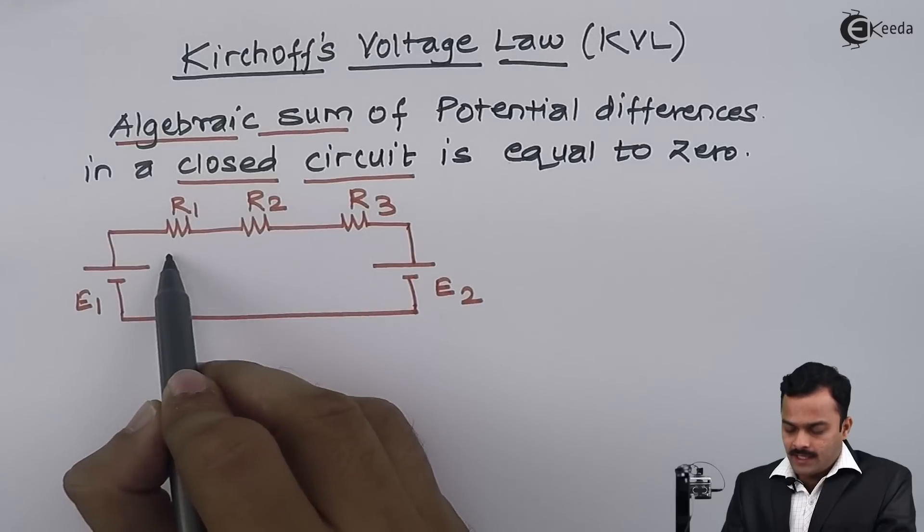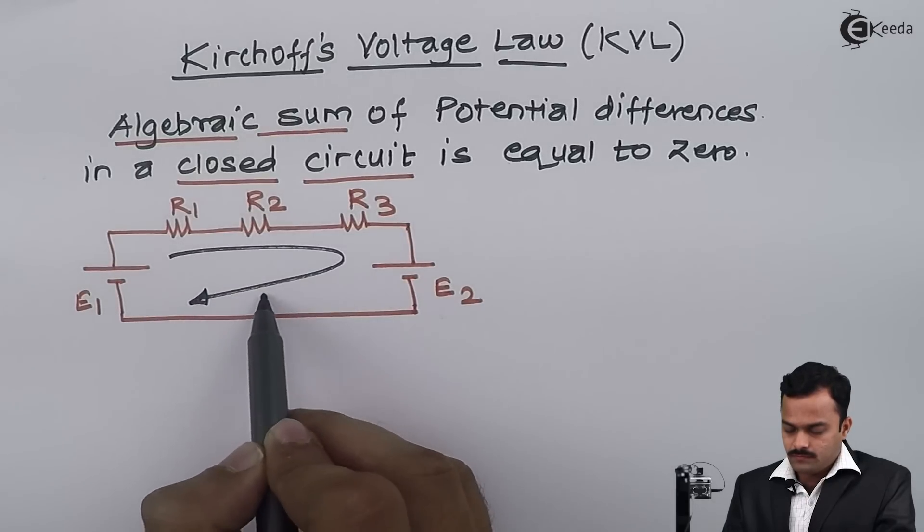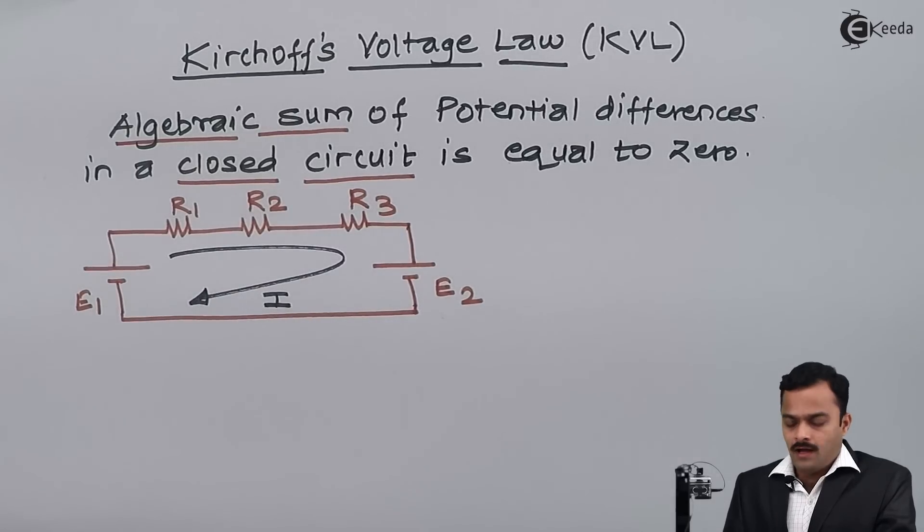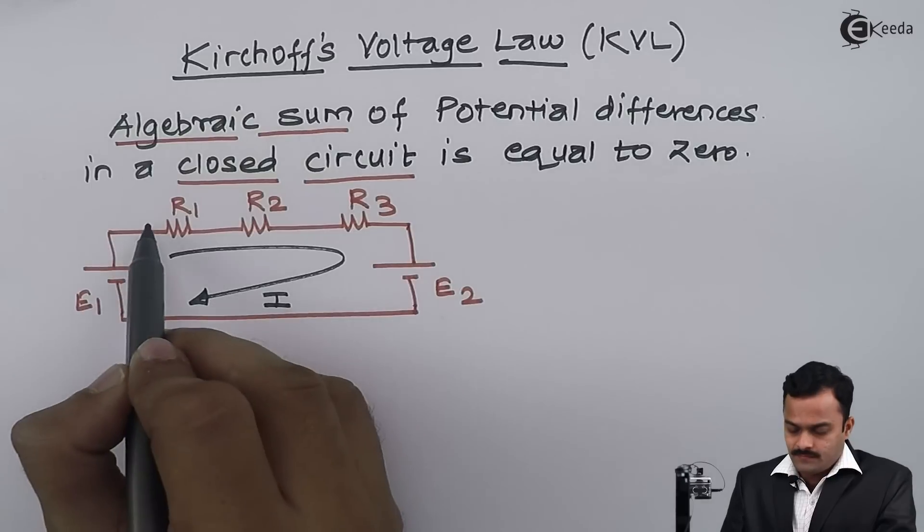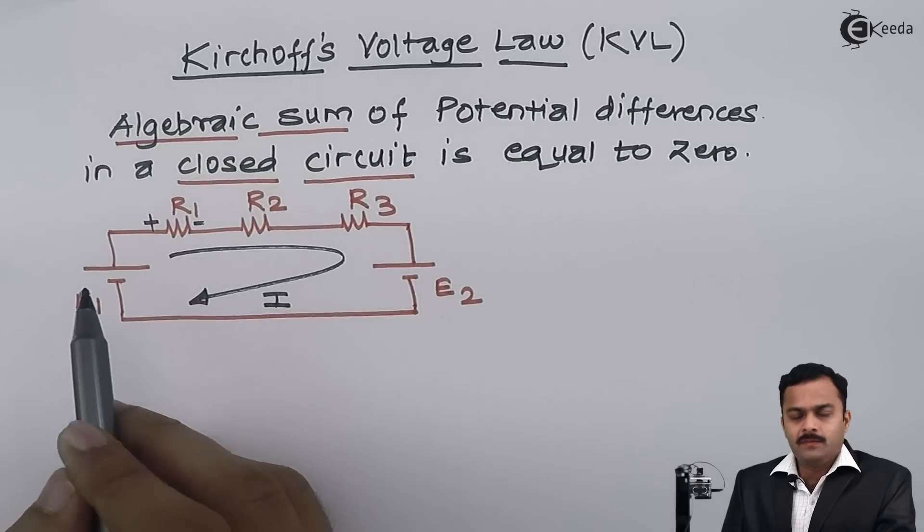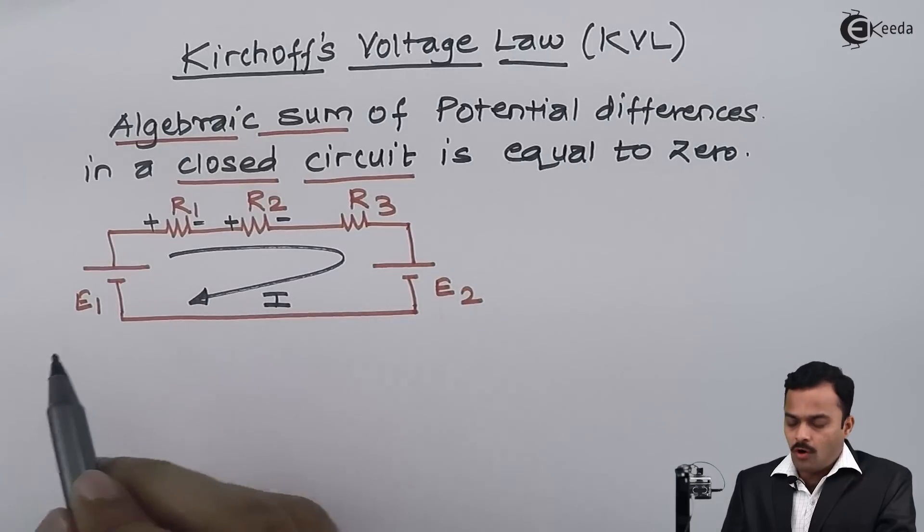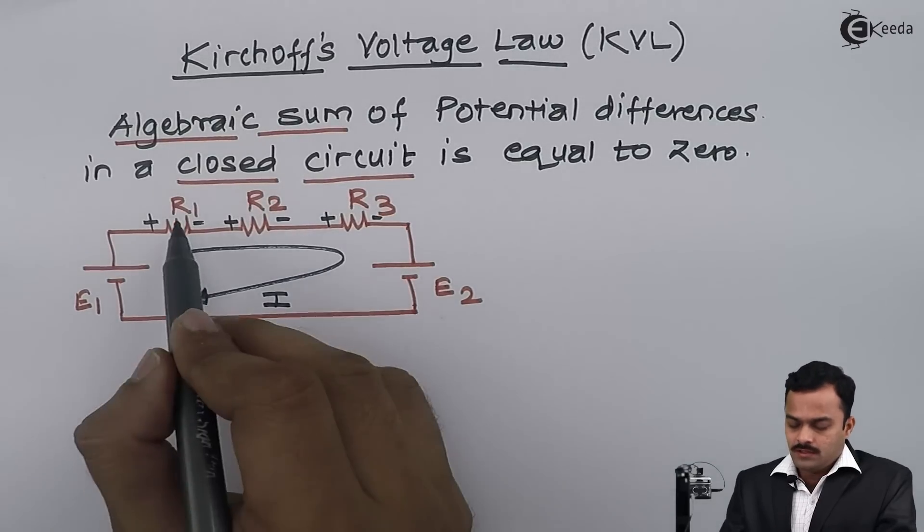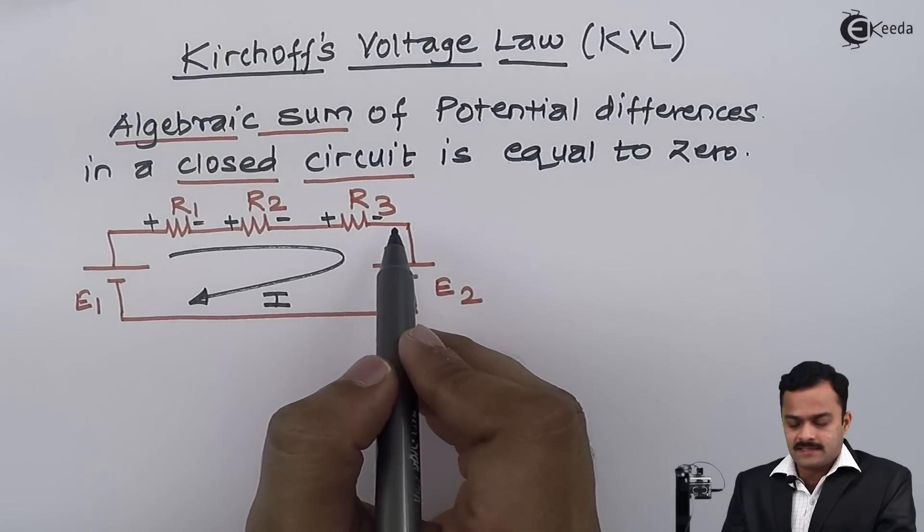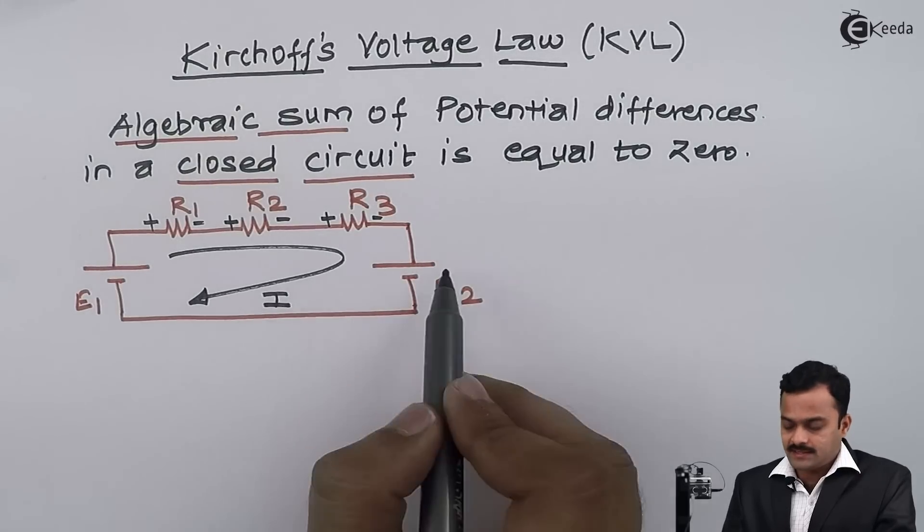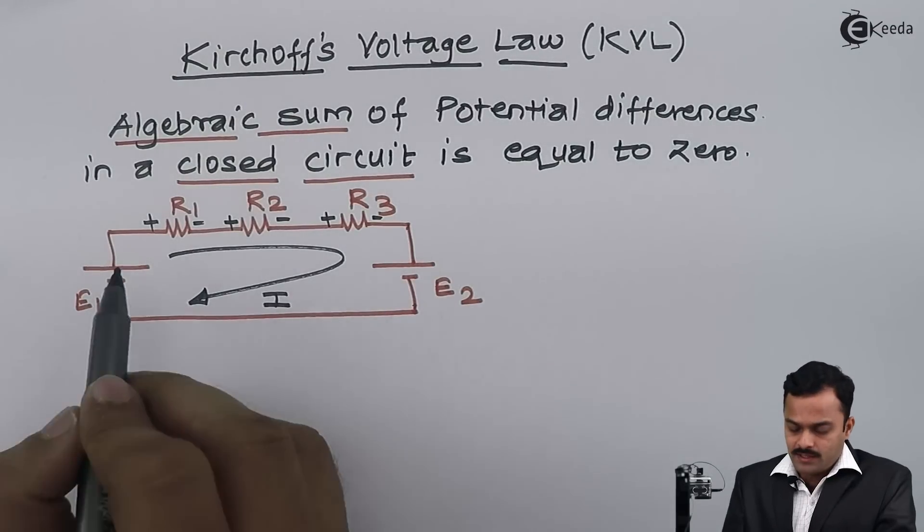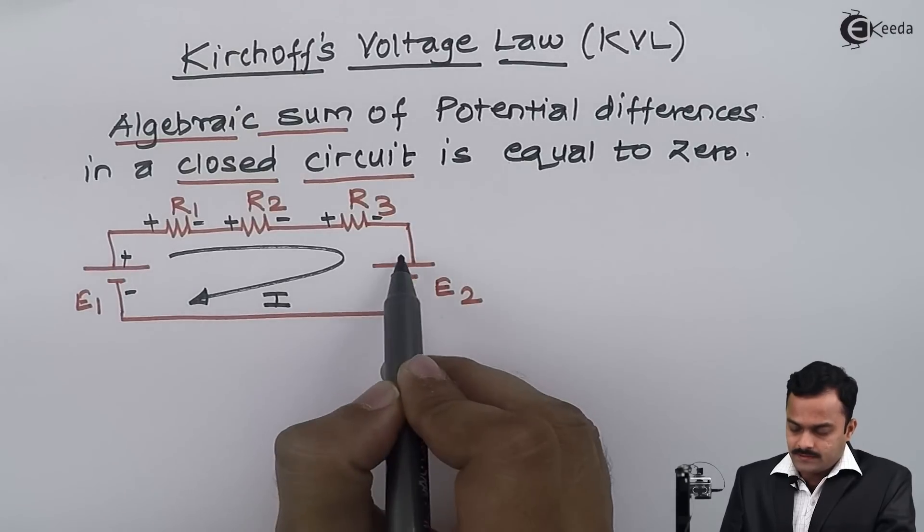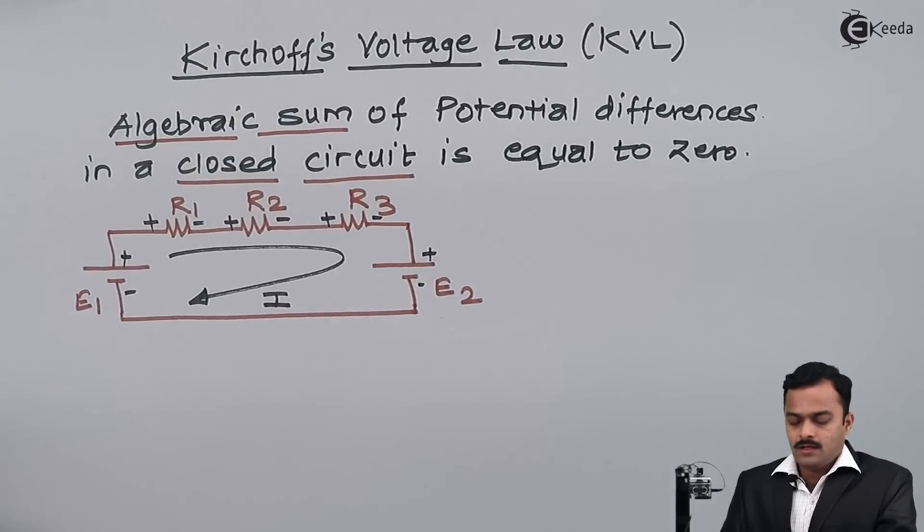Current will flow and because of this current there will be potential drop or voltage drop across these three resistances. These are the batteries having fixed polarities like this.